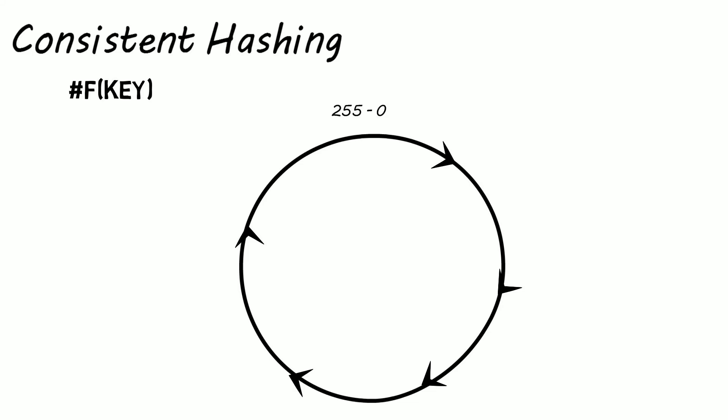Now we also need the servers to handle the request. With consistent hashing, we also hash the server IPs with the same hash function to determine where they sit on the ring. So let's add three servers: A, B, and C.